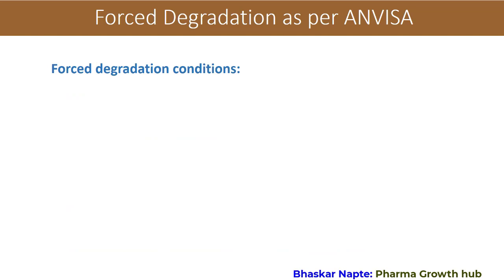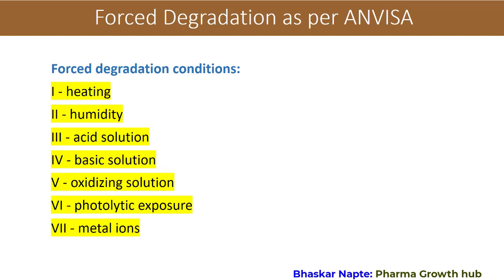Let us now understand the different forced degradation conditions. Similar conditions appear in the ICH guideline except for one. The conditions given in the ANVISA guideline are: heating, humidity, acid solution, basic solution, oxidizing solution, photolytic exposure, and metal ions. This last condition — metal ions degradation — is not part of the ICH degradation requirement; it is only mentioned in the ANVISA guideline. Thank you so much.